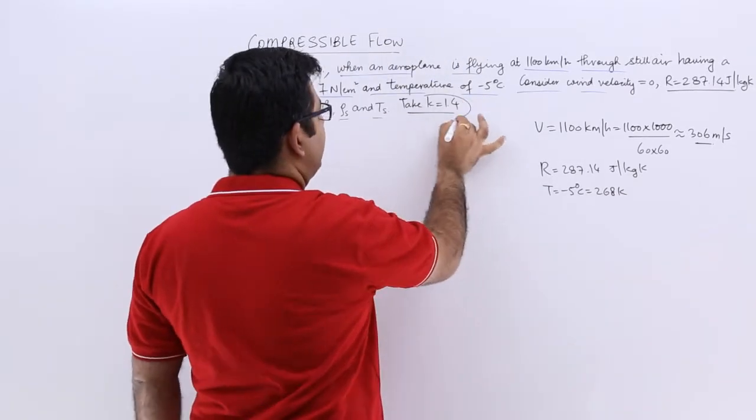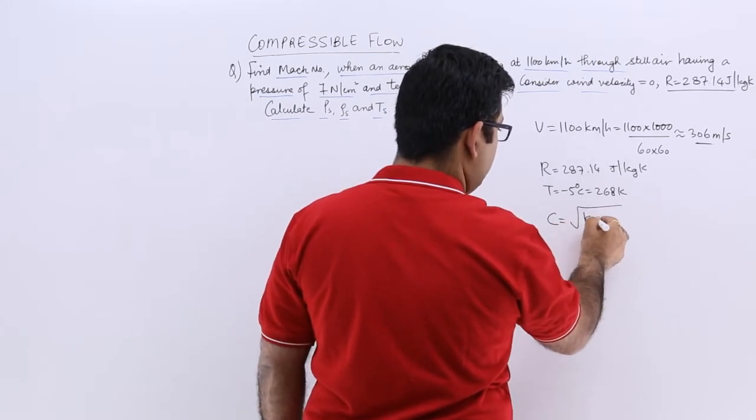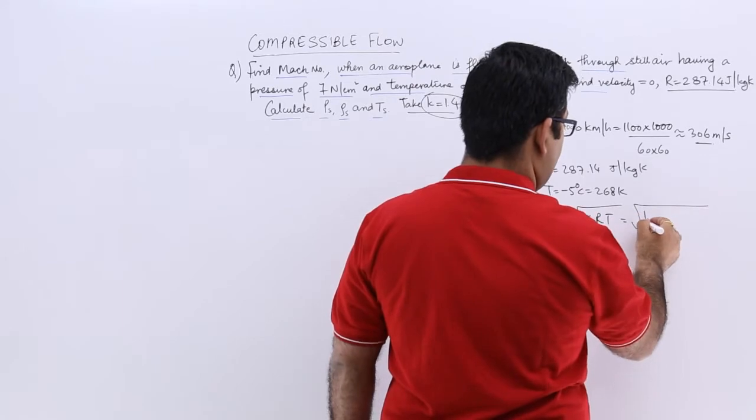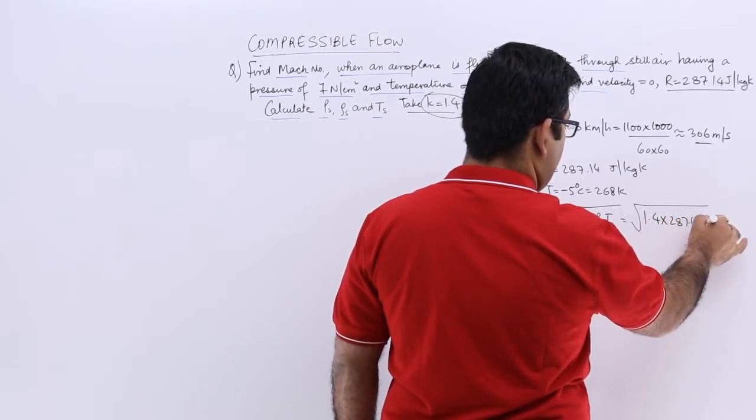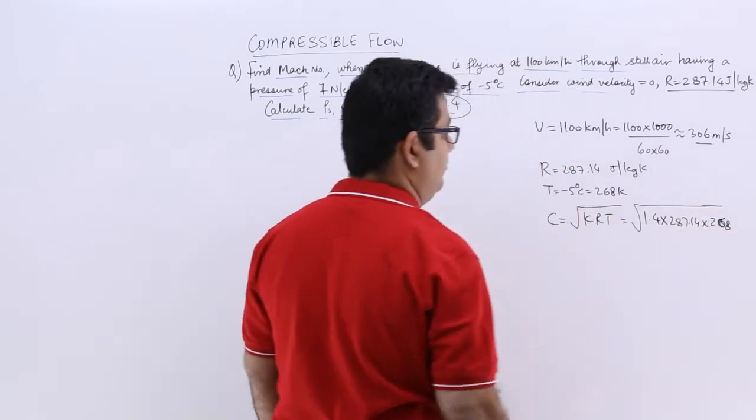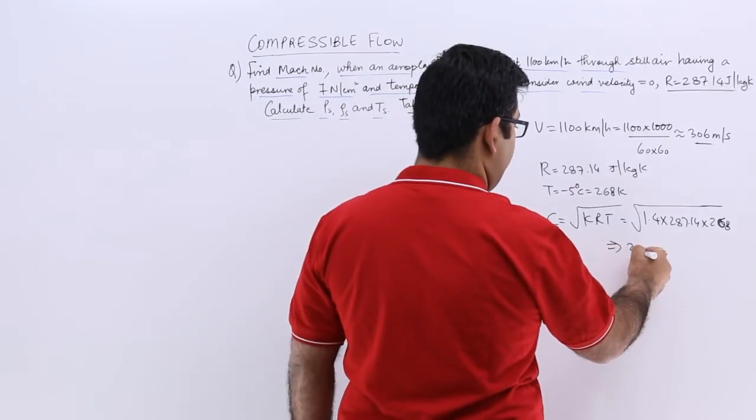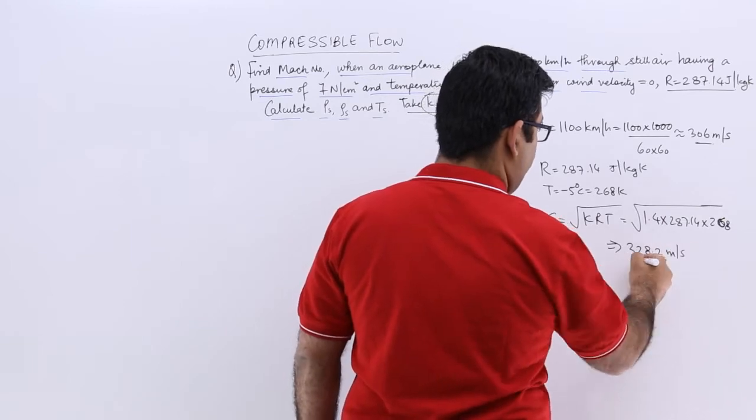And the adiabatic index is 1.4, so this gives us a value of the velocity of sound which is 1.4 into 287.14 into 268. So when you calculate this, you get a velocity of sound of 328.2 meters per second.